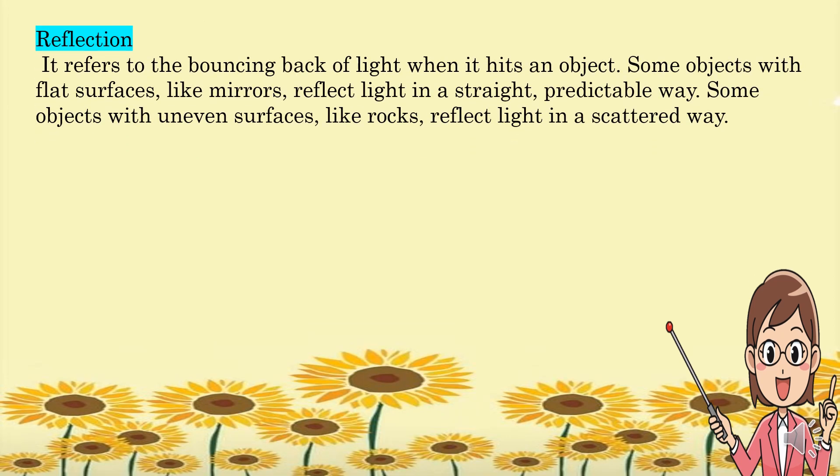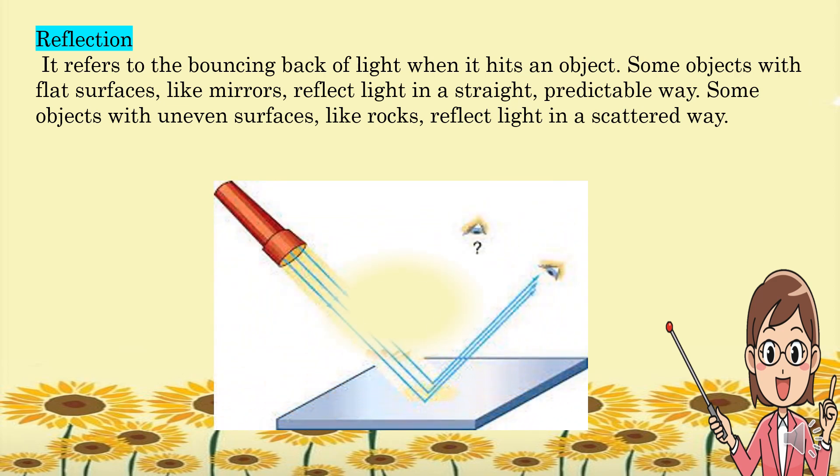Another is reflection. Reflection refers to the bouncing back of light when it hits an object. Some objects with flat surfaces like mirrors reflect light in a straight, predictable way. Some objects with uneven surfaces like rocks reflect light in a scattered way.